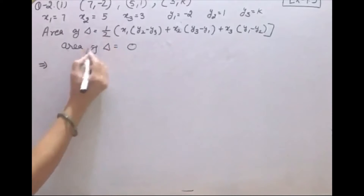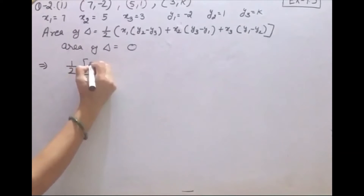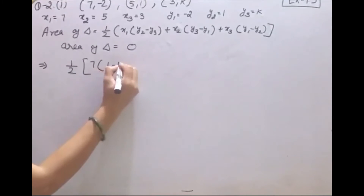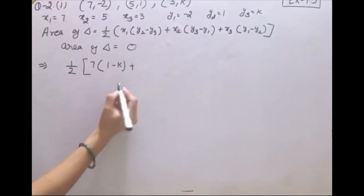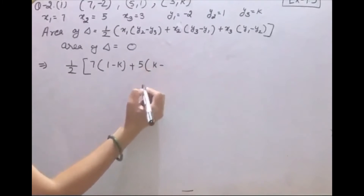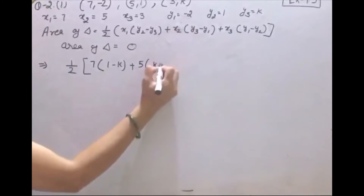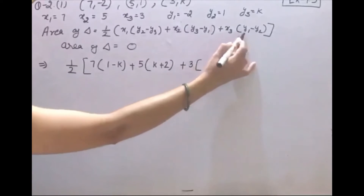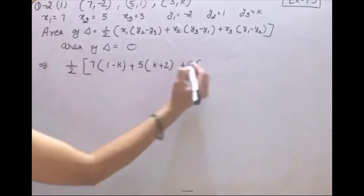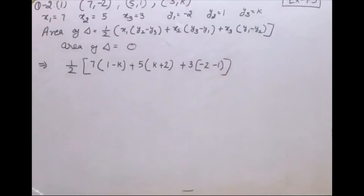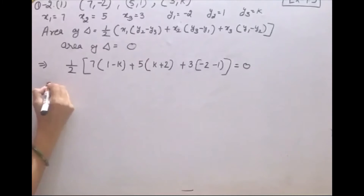Same values put करेंगे और area को equal to 0 करेंगे। Solve करेंगे: one upon two × [x1(y2 − y3) + x2(y3 − y1) + x3(y1 − y2)] = 0। यहाँ x1 = 7, y2 = 1, y3 = k; x2 = 5, y3 = k, y1 = −2; x3 = 3, y1 = −2, y2 = −1।